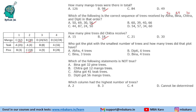Who got the plot with the smallest number of trees, and how many? Smallest is 3 trees, which Bina got. Which statement is not true? 'Bina got 32 pine trees' — that is not true. 'Chitra got 12 mango trees' — true. 'Abha got 41 teak trees' (25 + 16 = 41) — true. 'Deepti got 56 mango trees' — true.